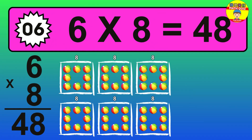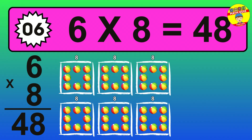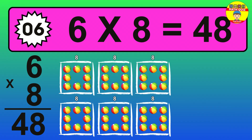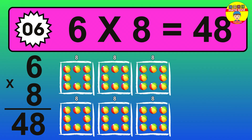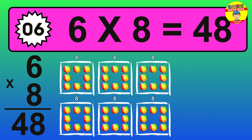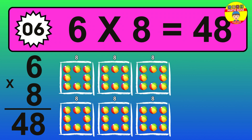The answer is 6 times 8 is 48. To calculate, we have 6 groups with 8 balls each one. So, how many balls do we have? 48 balls.